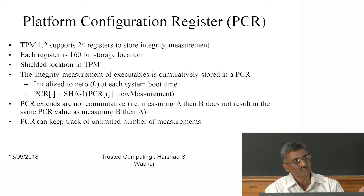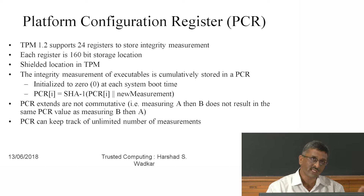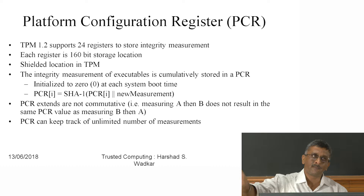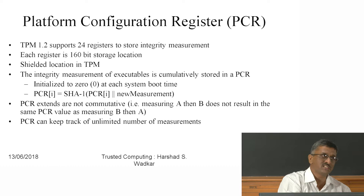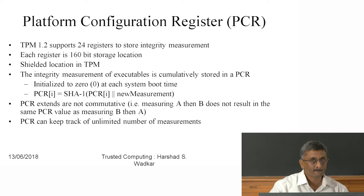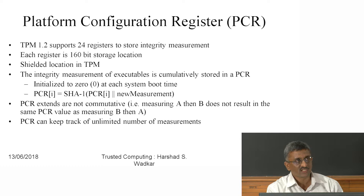For example, package A's hash is stored in PCR 5. When loading application B after A, B's hash is also extended into PCR 5 — so PCR 5 contains the hash of A followed by B. If instead B is loaded first, then A, the PCR value is different. PCR extends are not commutative: measuring A then B is different from B then A.